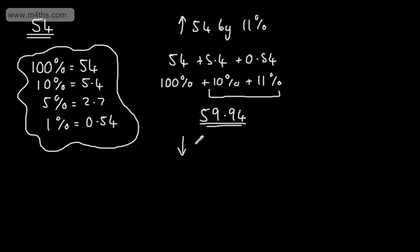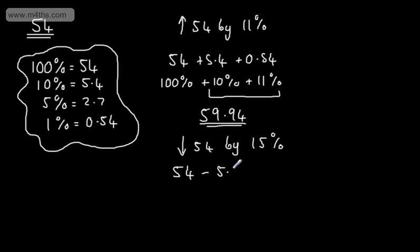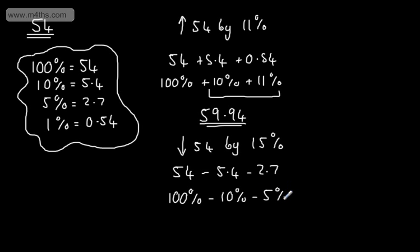Let's say we wanted to decrease 54 by 15%. All we'd do is find 10%, which is 5.4, and 5%, which is 2.7, and subtract them. So we have 54 minus 5.4 (the 10%) minus 2.7 (the 5%). These are typical non-calculator questions. Adding 5.4 and 2.7 gives 8.1, so that gives us 45.9.